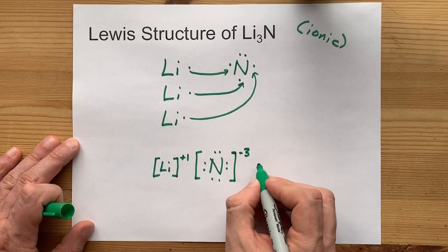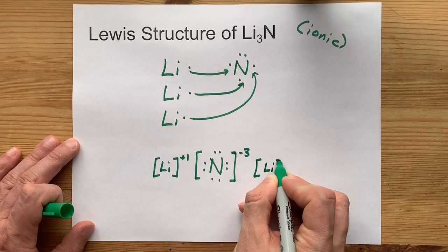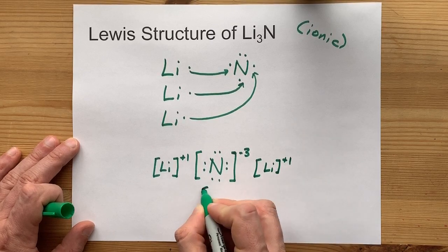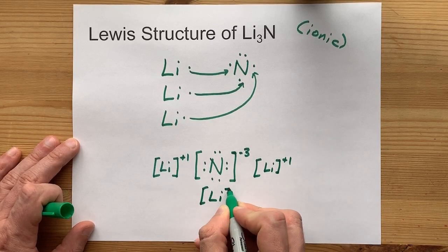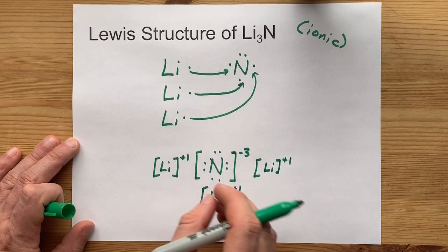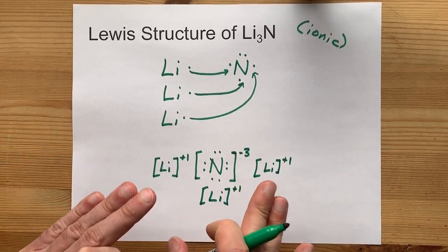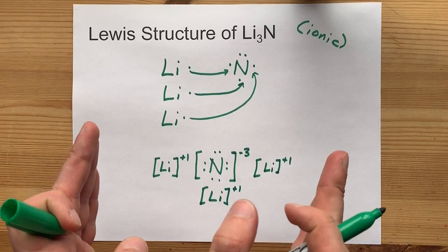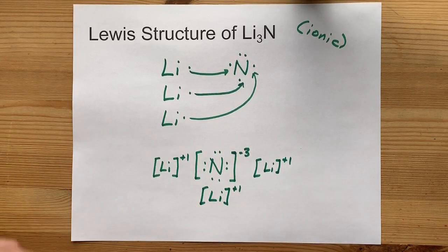You need to do that three times. Maybe put one to the left, one to the right, and one below to show that the lithiums are surrounding that nitrogen. This actually makes a repeating crystal, but this is the Lewis structure for a single unit of lithium nitride.